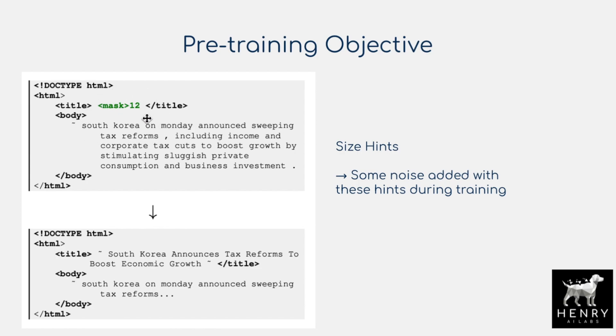There's been a lot of research in exactly this kind of pre-training objective — subtle changes going from masking single tokens, to masking spans, to the Pegasus objective where entire sequences are masked, to ideas like Electra with a generator-discriminator setup. Overall, this size hint signal is the new addition they're testing.